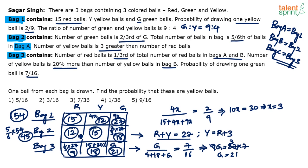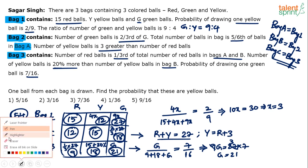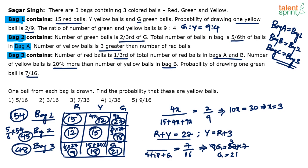Now answering question one: one ball is drawn from each bag — find the probability that all three are yellow. We need to multiply the individual probabilities. Probability of yellow from bag 1 = 12/54; from bag 2 = 15/45; from bag 3 = 18/48. Since we want yellow from bag 1 AND bag 2 AND bag 3, we multiply these together.